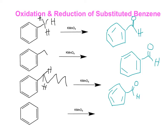Therefore, if we have a carbon coming off of the ring with three different R groups, or possibly a double bond — something that results in no hydrogen groups being around that carbon — there is actually no reaction that occurs.